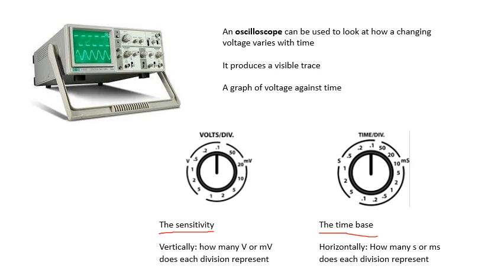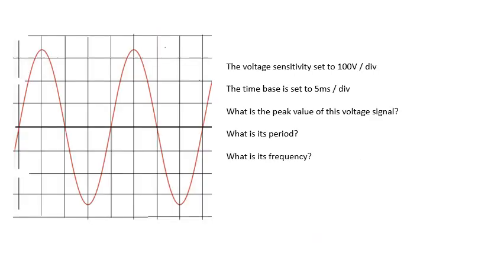The time base is horizontal. This is seconds per division, or milliseconds per division, or possibly even microseconds per division. It's basically how long it takes the little dot to travel one little square horizontally. So it's our time axis - the time base - and the sensitivity is our y-axis.